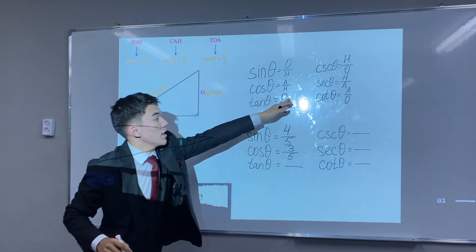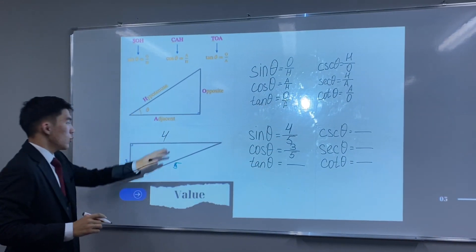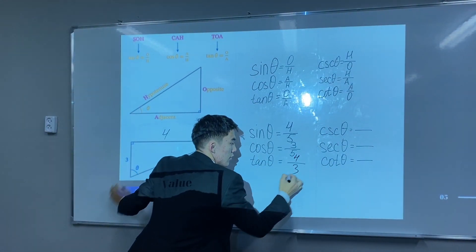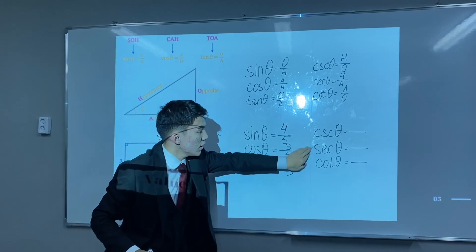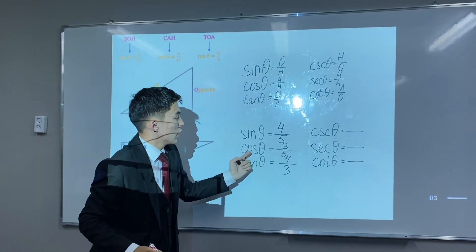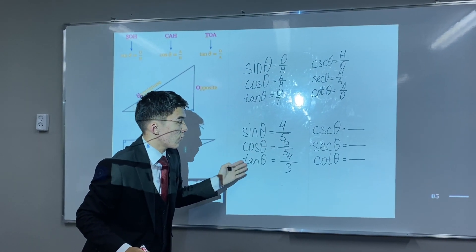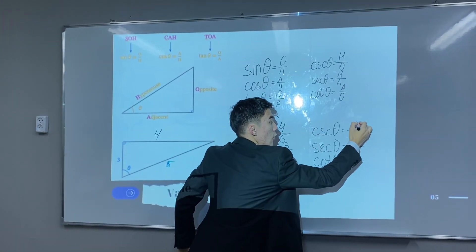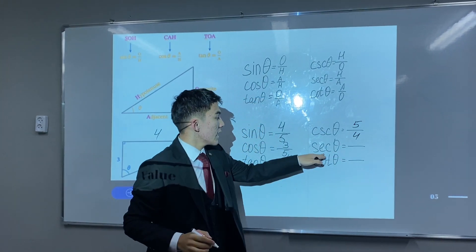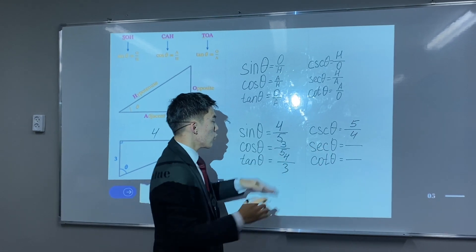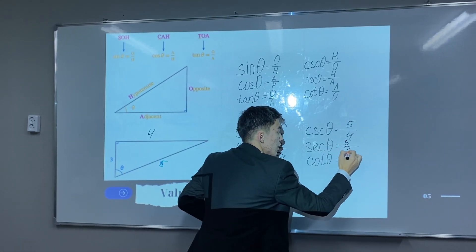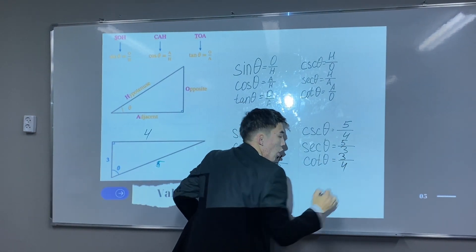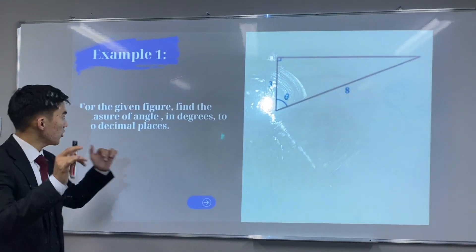Tangent theta equals opposite over adjacent = 4/3. Since these three are reciprocal to the primary functions: secant theta equals 5/4, cosecant theta equals 5/3, and cotangent theta equals 3/4. That completes our first example.